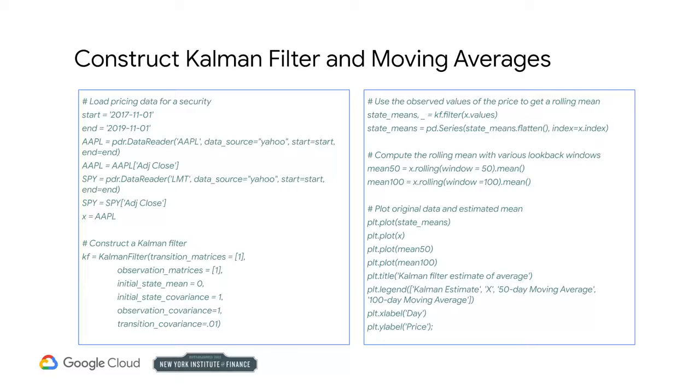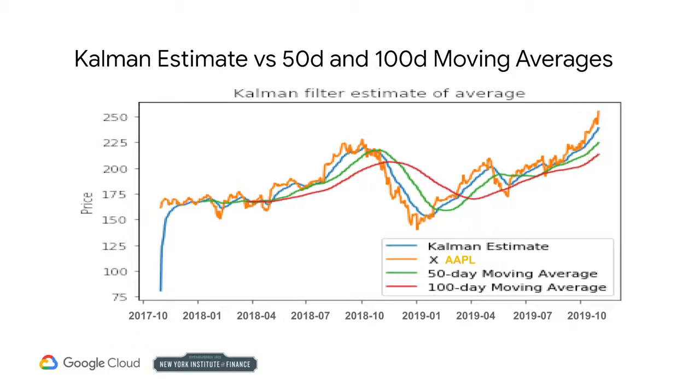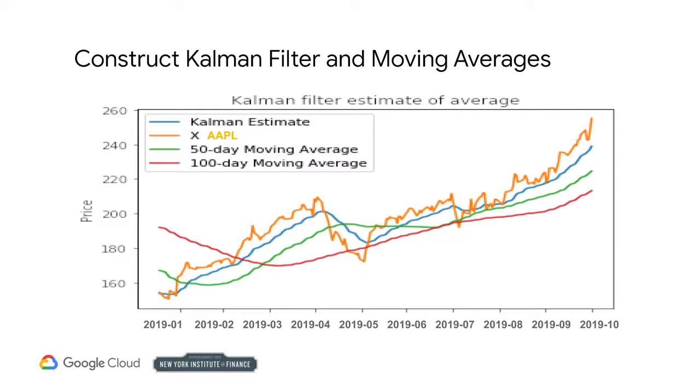We will compare the Kalman estimate of the rolling mean to the 50 and 100 day moving averages for the same price series. Our initial guess for the mean is zero, but the filter quickly realizes that that is incorrect and adjusts its estimate to converge with the Apple price series. You can see that the Kalman estimate smooths out the series less than the moving averages. The advantage of the Kalman filter is that we don't need to select a window length so we run less risk of overfitting.